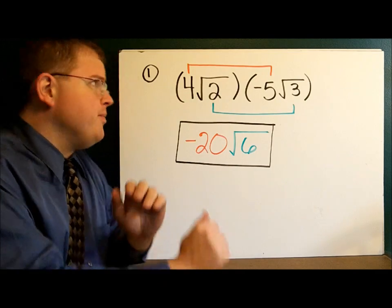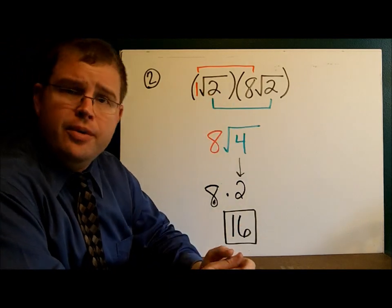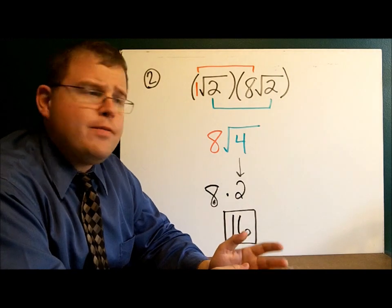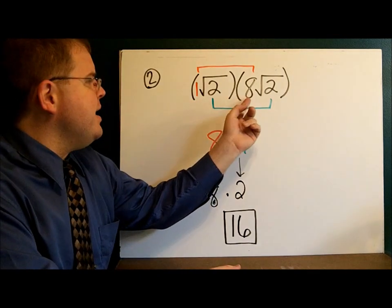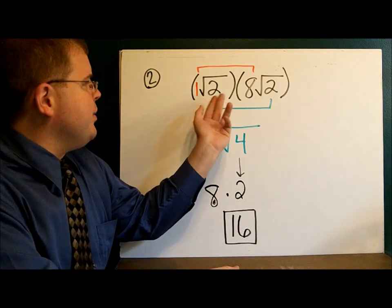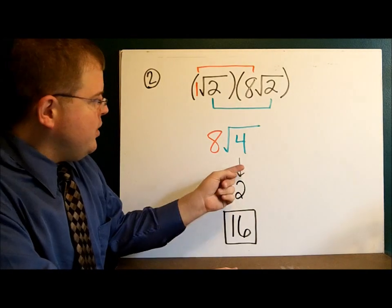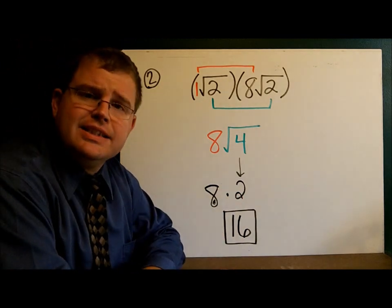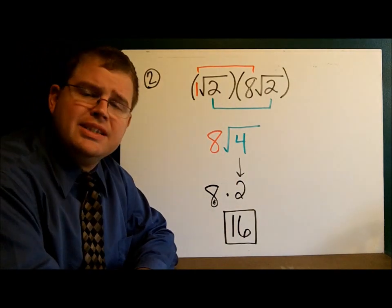In example 2, we have the square root of 2 times 8 square roots of 2. Remember, if there's no number written in front, it's automatically a 1. So when we multiply the outsides, we have 1 times 8, which is 8. And when we multiply the radicands — the inside numbers — we have 2 times 2, which is 4. Now let's simplify the radical: the square root of 4 is 2, so I have 8 times 2, which is 16.